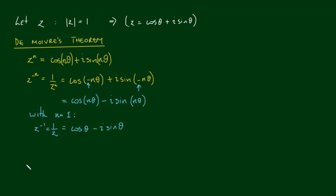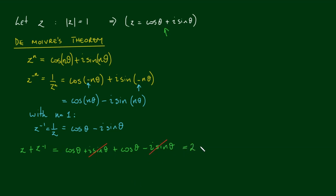Now here's where things get interesting. If I add z and z to the negative 1 — so z plus z to the negative 1 — I get cosine theta plus i sine theta plus cosine theta minus i sine theta. The i sine theta and minus i sine theta cancel out, and we're left with 2 cosine theta, or 2 times the real component of z. So I can rearrange this: cosine theta equals z plus z to the negative 1, all over 2.